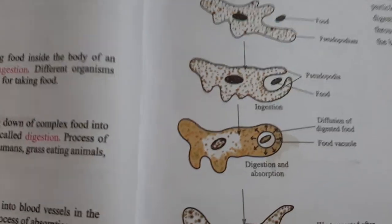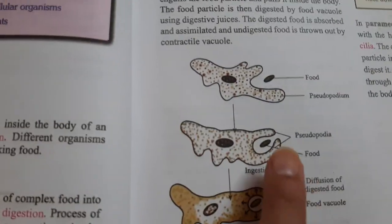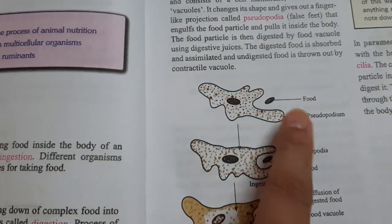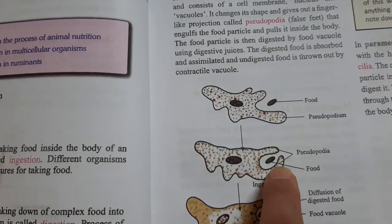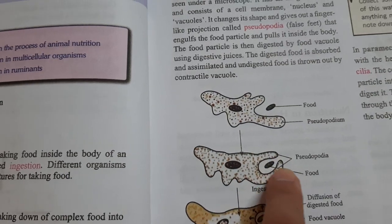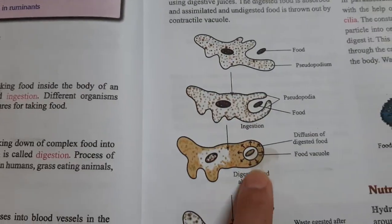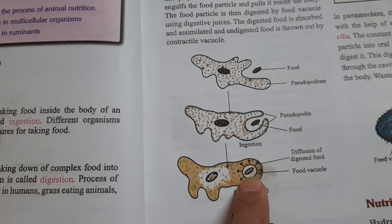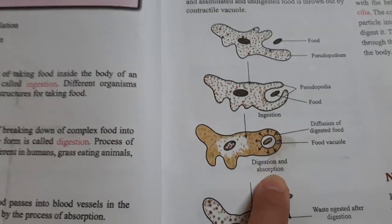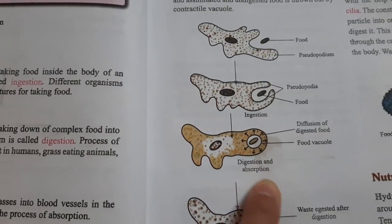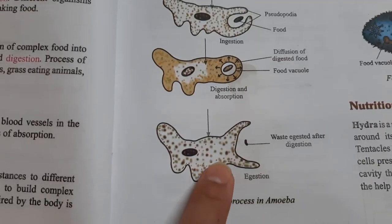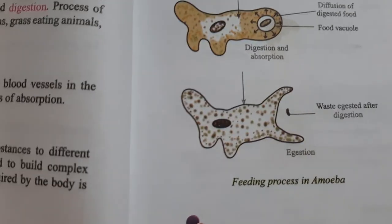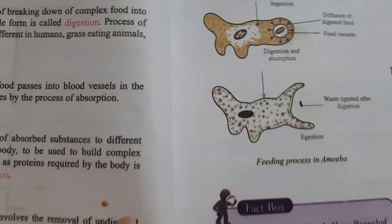Looking at the picture of amoeba: this is the food, and these are the pseudopodia. The pseudopodia capture and engulf the food and bring it to the middle, where digestion and absorption take place in food vacuoles. Waste remaining after digestion is expelled. This is the feeding process in amoeba.